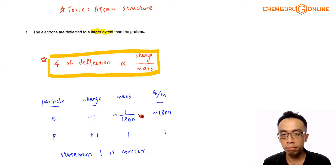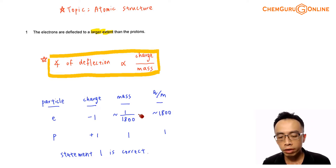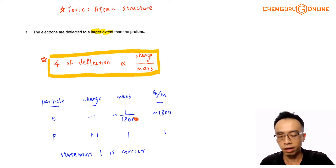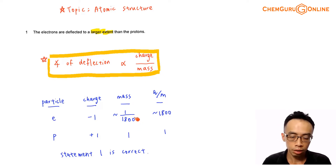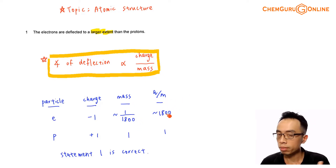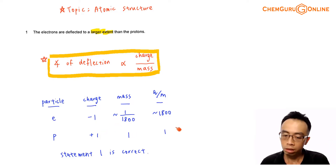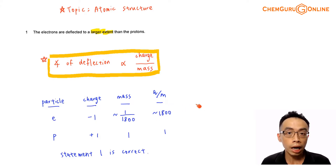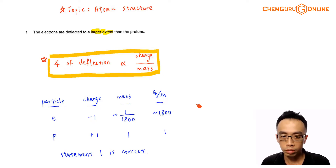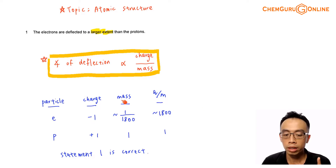We just know that the electron's mass is significantly smaller than the proton's. So if we consider the charge-to-mass ratio for the electron, it is 1 divided by 1/1800, which equals about 1800. The charge-to-mass ratio for the proton is 1 divided by 1, which equals 1. So the charge-to-mass ratio for the electron is about 1800 times more than for the proton, meaning the electrons will be deflected to a larger extent. Statement 1 is correct.